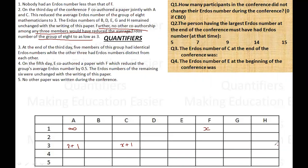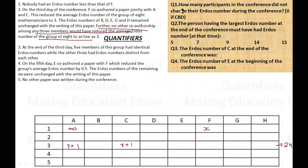No other co-authorship among three members would have reduced the group's average as low as three. On the third day the average for eight people was three, which means the total was 24 (average times number of people). This means all the other people must have had an Erdős number which is less than A and C's number.